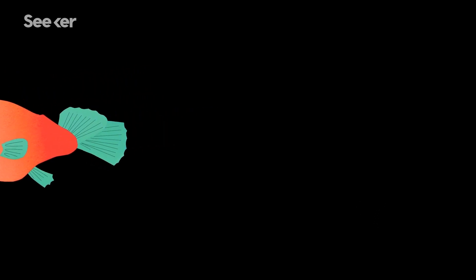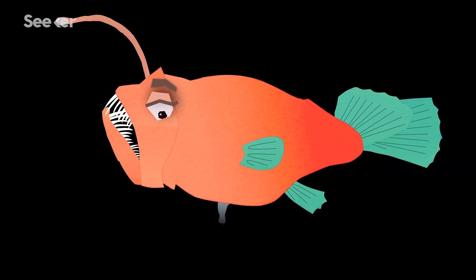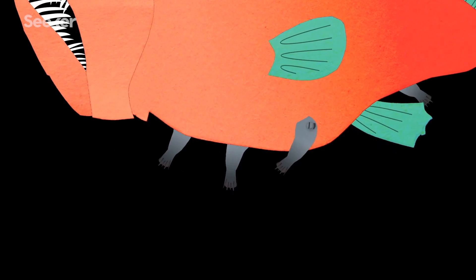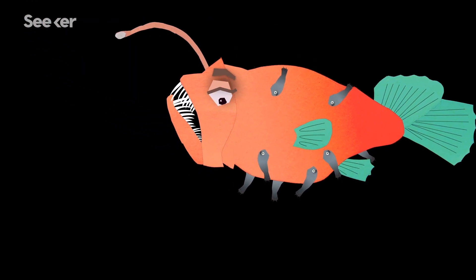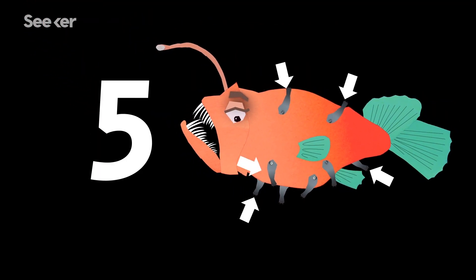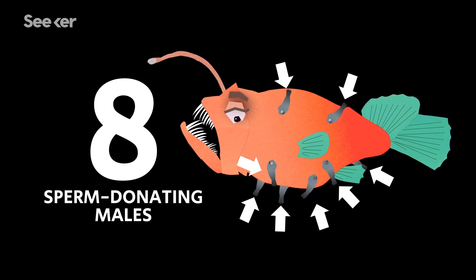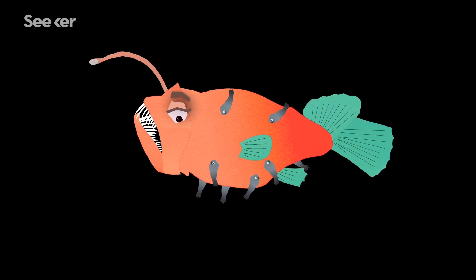In return, he'll give her sperm. But this doesn't mean that the male can get lazy because his sperm is competing with that of several other males that also call this female home. At any given time, a female can be host to up to eight sperm-donating males, so it's important that they all produce the very best swimmers.